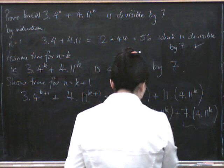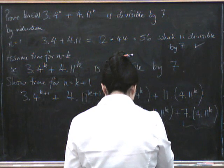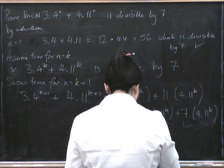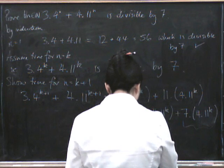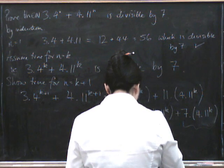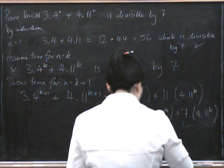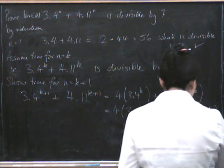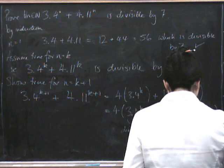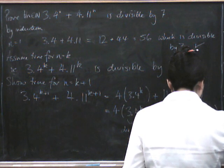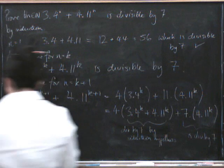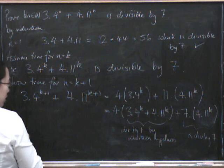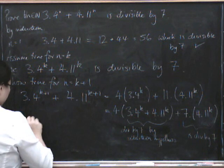So, let's just write that down. This is divisible by 7 by the induction hypothesis. And this is divisible by 7 because it's a multiple of 7. So, the result is true for k plus 1.